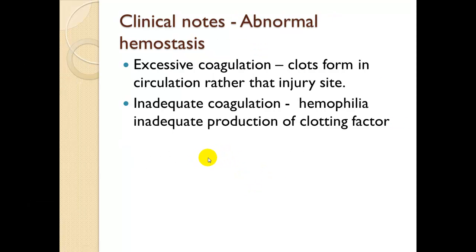Abnormal hemostasis: excessive coagulation occurs when clots form in circulation rather than at the injury site. People with too much clotting factor can easily form clots, causing pulmonary embolisms or clogging filtering vessels like the liver or kidneys. Inadequate coagulation — as seen in hemophilia — involves inadequate production of clotting factors. The first time someone with hemophilia is hit or bruised, it could cause lethal bleeding or a lethal hypovolemic event.